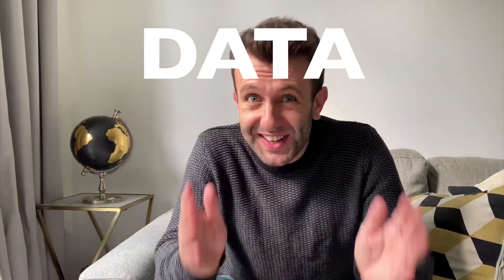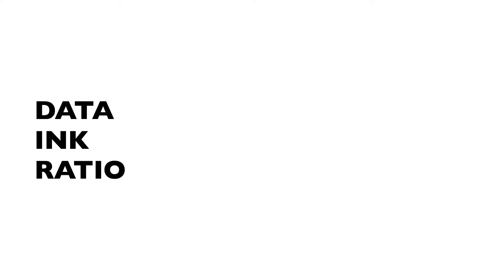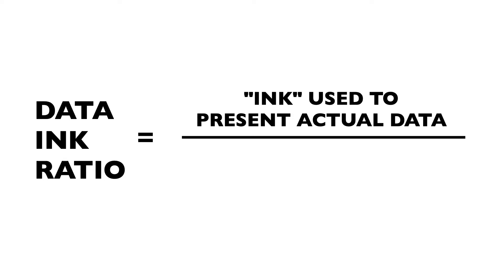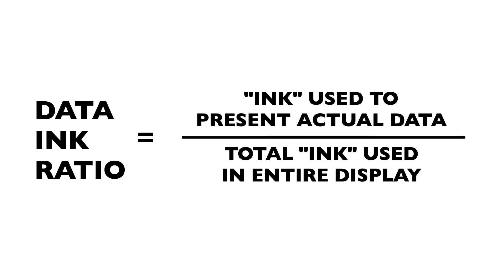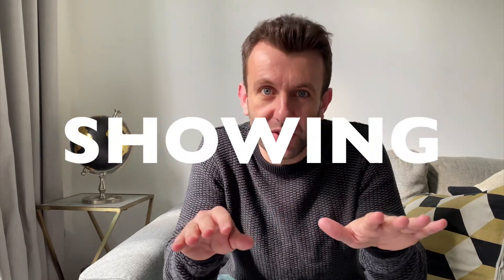Let me introduce you to the data-ink ratio. The data-ink ratio is the proportion of ink used to present actual data compared to the total ink or pixels used in the entire display. Or to put it simply: get rid of everything that isn't showing the data.